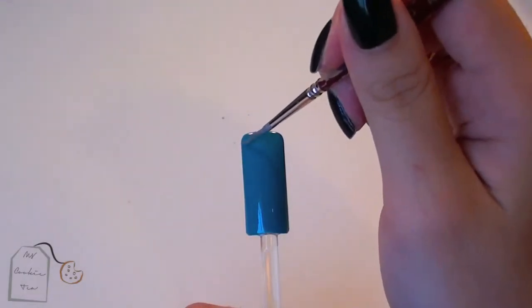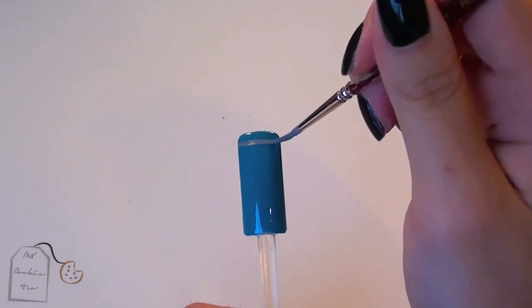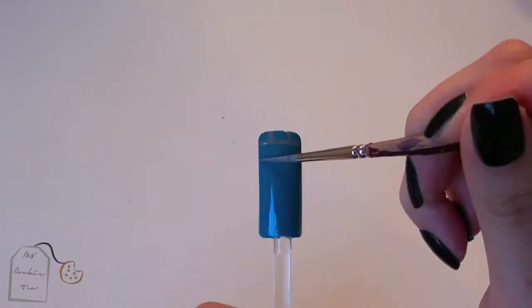Next I'm going to take a gray acrylic paint and I'm going to create the bricks for the background.